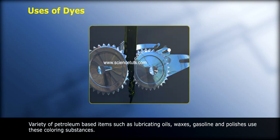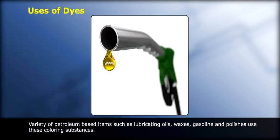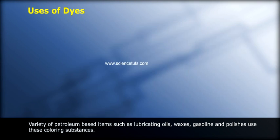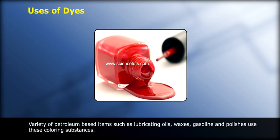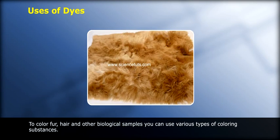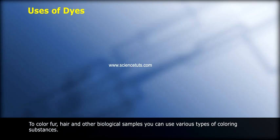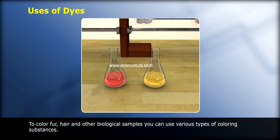A variety of petroleum-based items such as lubricating oils, waxes, gasoline, and polishes also use these coloring substances. They are also used to color fur, hair, and other biological samples using various types of coloring substances.